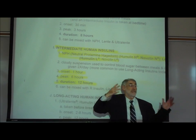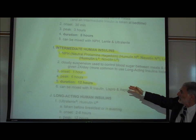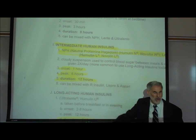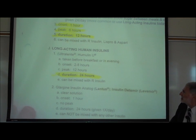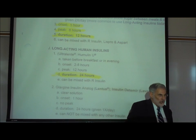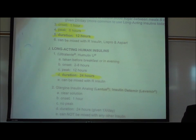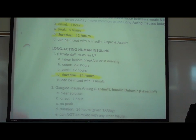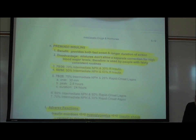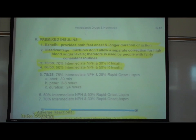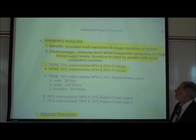There are intermediate insulins with an onset of one hour before you see any blood-sugar-lowering effect, but with a 12-hour duration of action. There are also very long-acting insulins with a 24-hour duration of action. And on page S12, there are premixed combinations that combine long-duration with short-duration insulins.